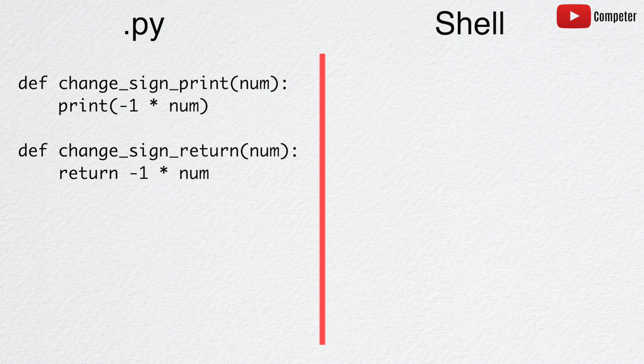change_sign_return is the same function, but instead of printing the result, we instead return the result.